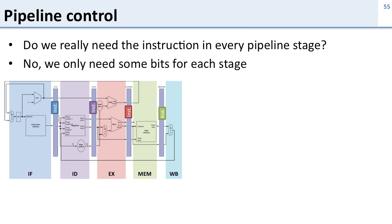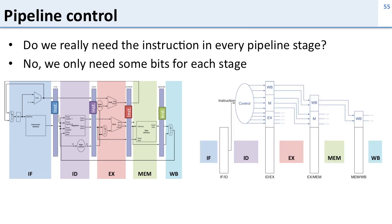This is called instruction decode, and let's take a look at how it works. Here we've got our five pipeline stages, and after we've read the instruction we're going to put it into some control logic. This control logic is going to figure out bits for what each of the stages do later on — it figures out bits for the writeback stage, the memory stage, and the execute stage.